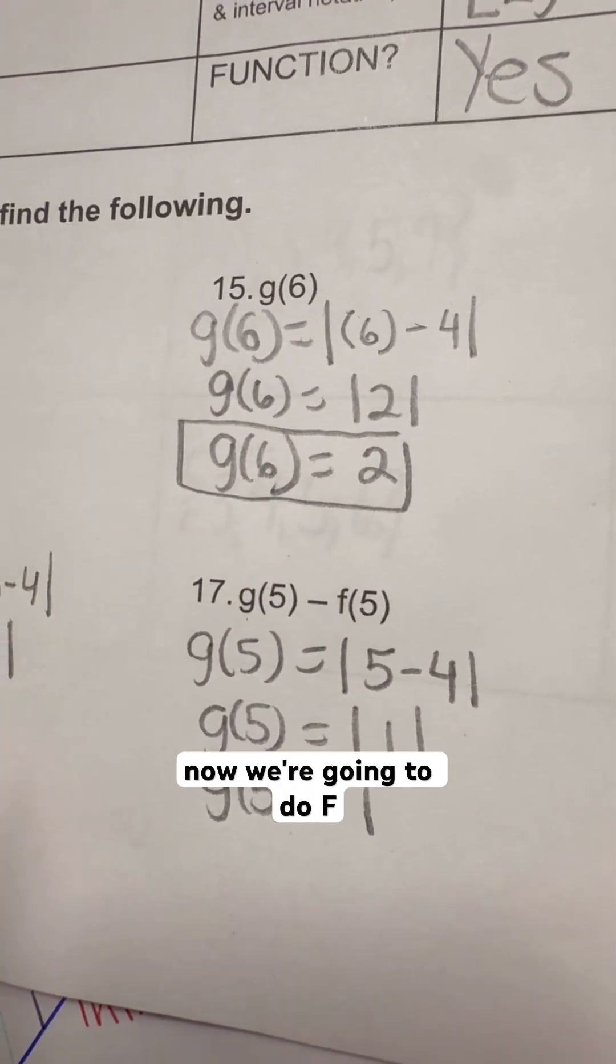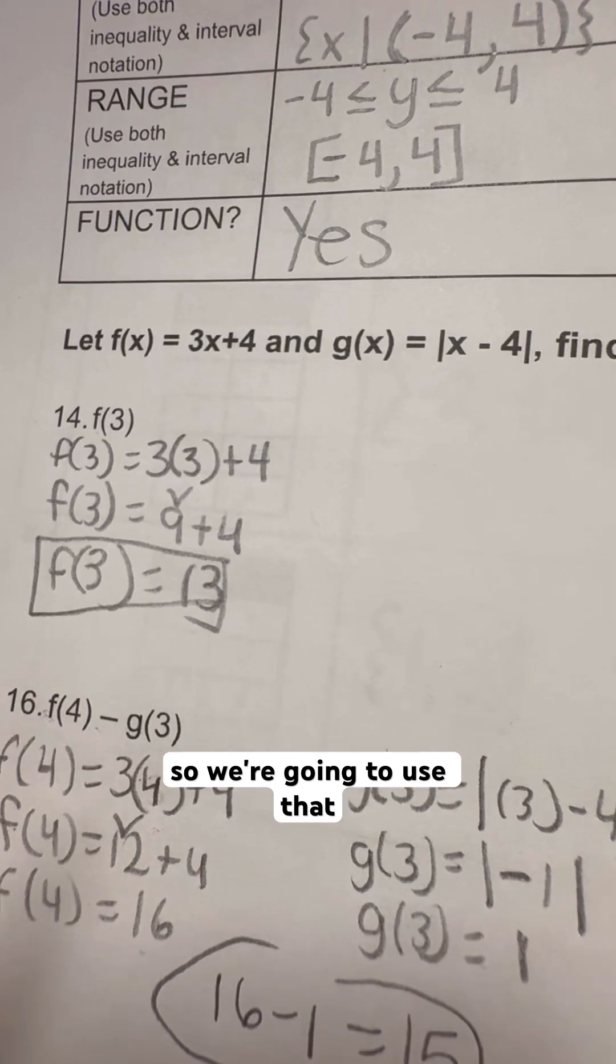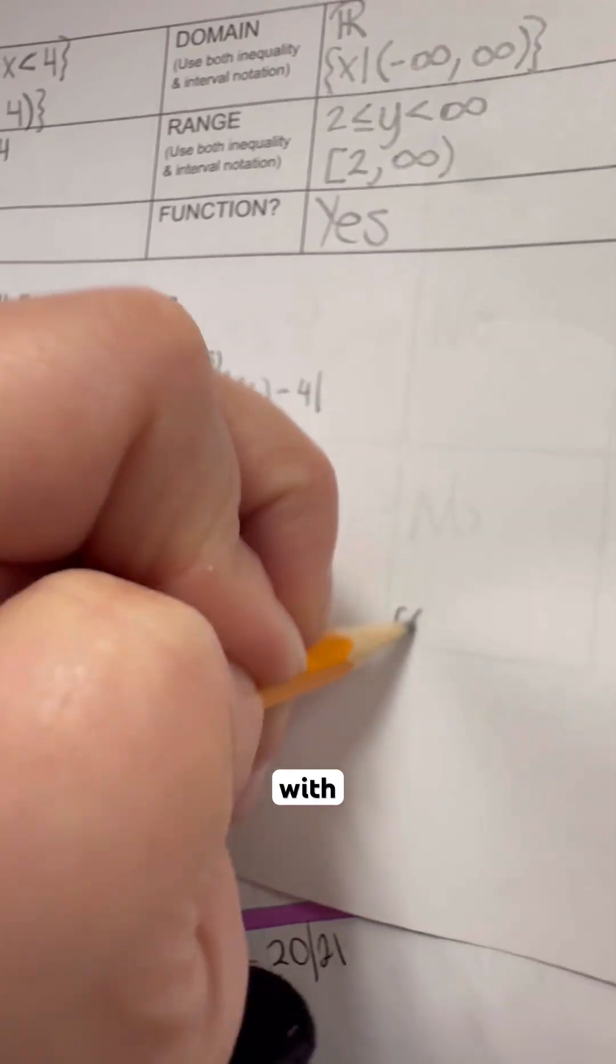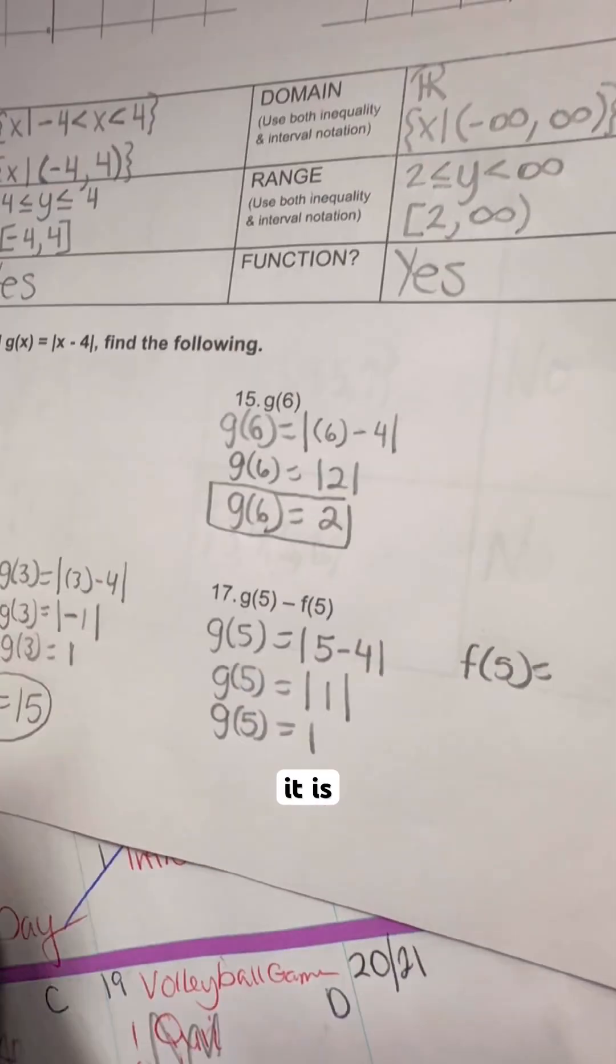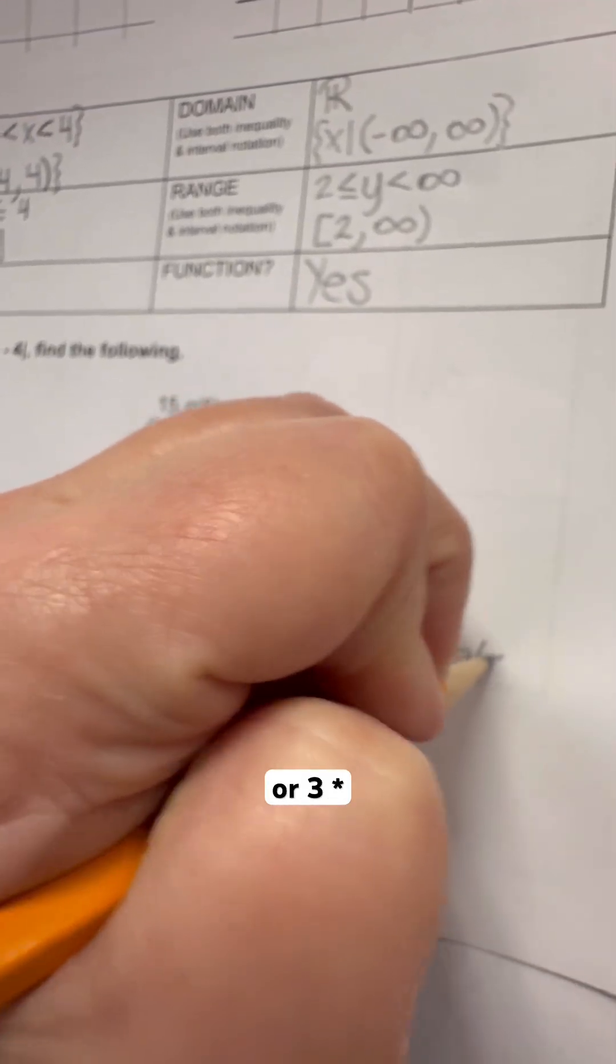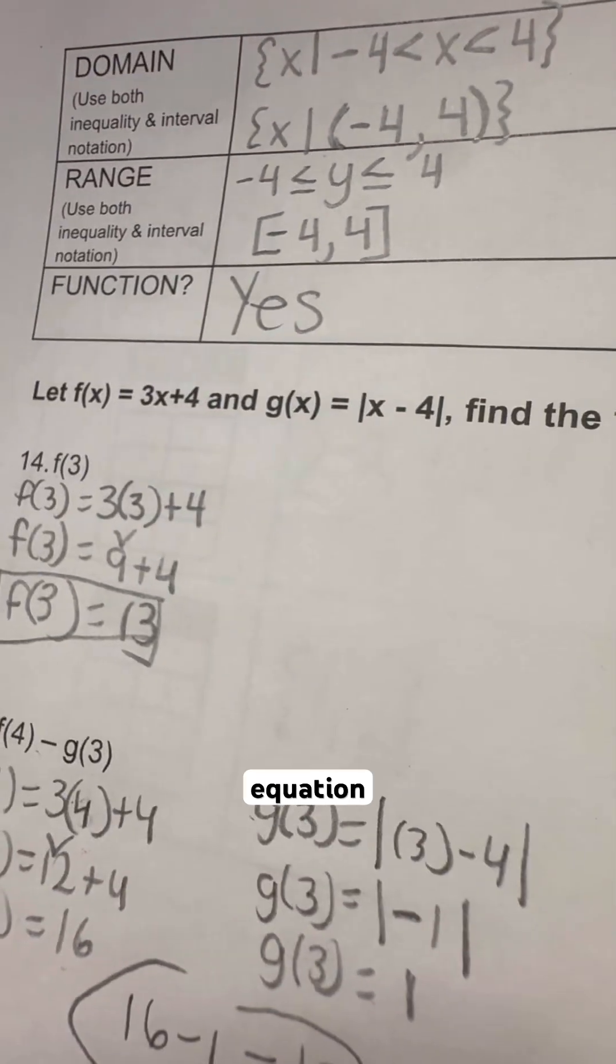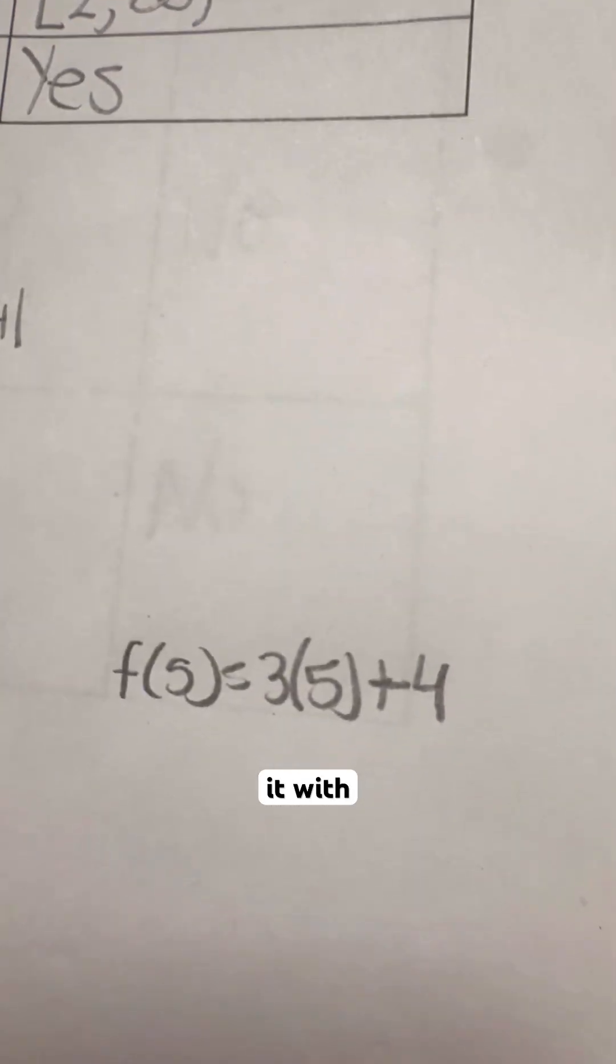Now we're going to do f of 5. So we're going to use that f of x equation and replace x with 5. And it is 3x, or 3 times 5, plus 4. And that's what we're going to do. Again, that's just this equation up there, replacing it with 5.